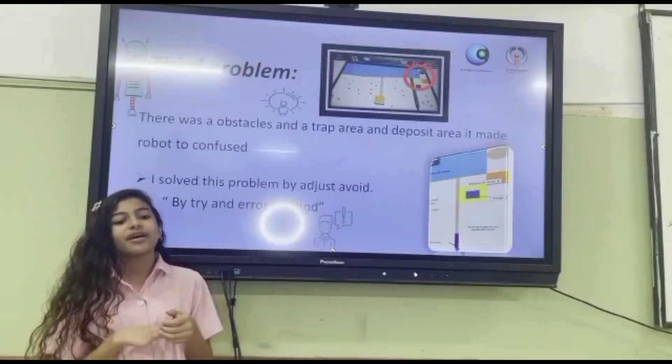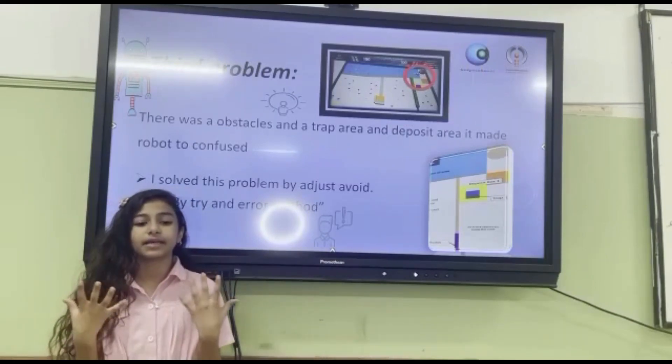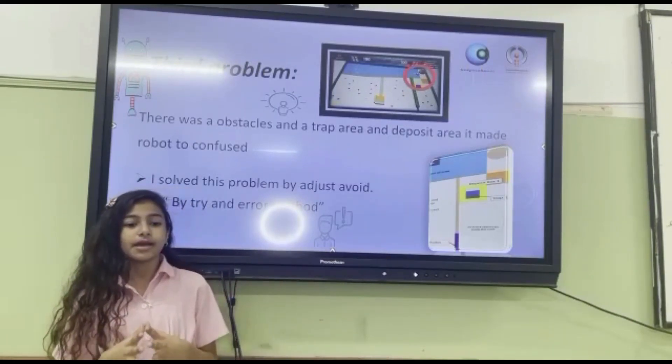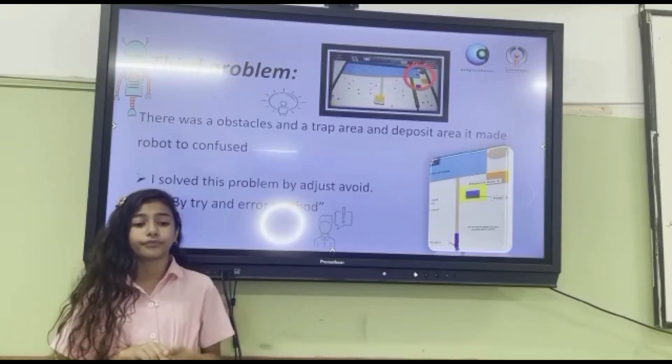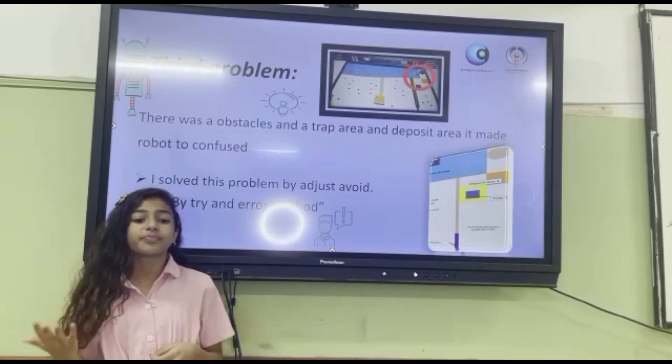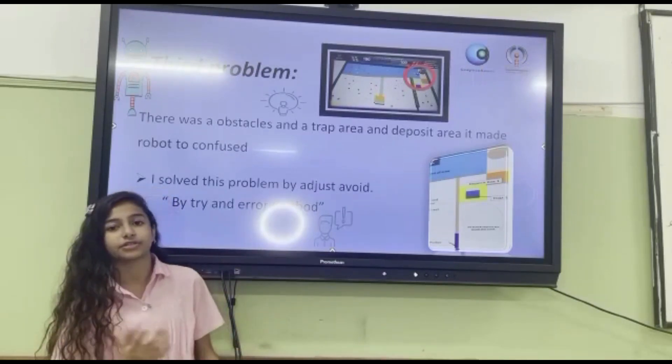Third problem: there is an obstacle and a trap area and a deposit area. It makes the robot confused. I solve this problem by adjust, avoid, by try and error methods.